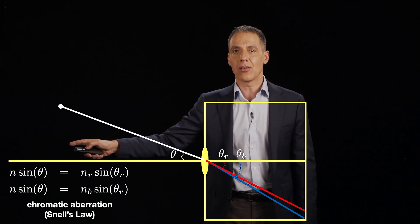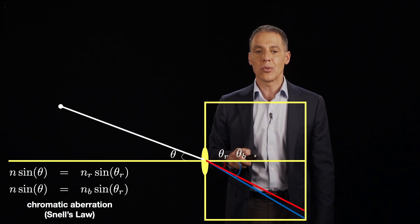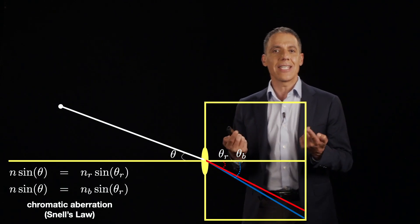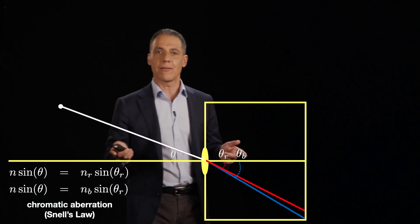So theta is the angle that the red light is making. Theta b is the angle that the blue light is making. And n is the index of refraction for the lens and for air.